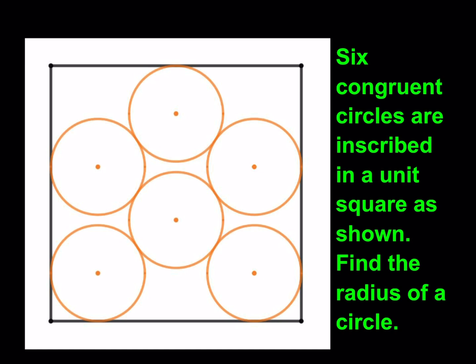Six congruent circles are inscribed in a unit square as shown. Find the radius of a circle. Since they're all congruent, we're just going to find the radius of one of the circles. This problem you may have seen before because it's not very uncommon, and I'll try to include some links in the description down below. So we're going to start by making some connections as always. Let's go ahead and make those connections.